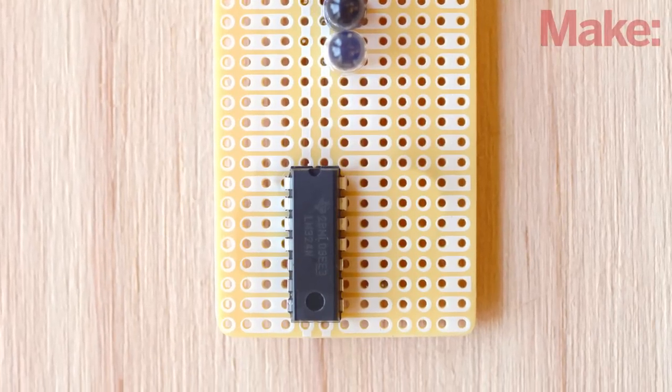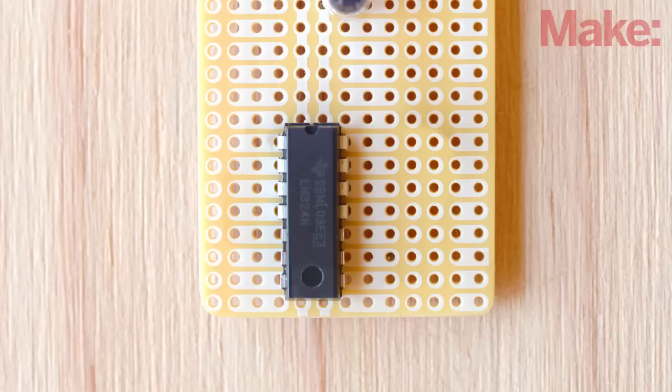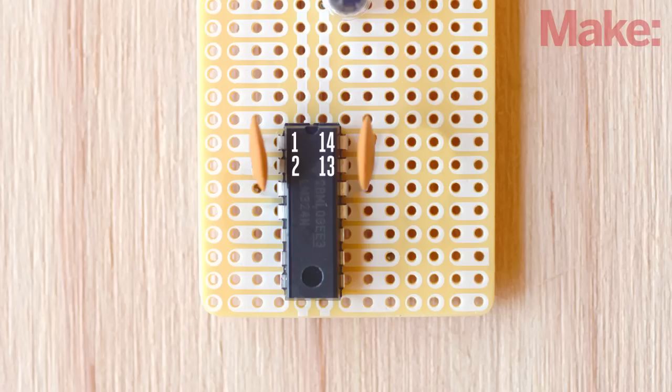Now let's wire up the op amp. First, solder the two 0.1 microfarad ceramic disc capacitors. The first goes between pins 1 and 2 and the second between pins 13 and 14. Mount and solder the remaining six resistors according to the schematic.